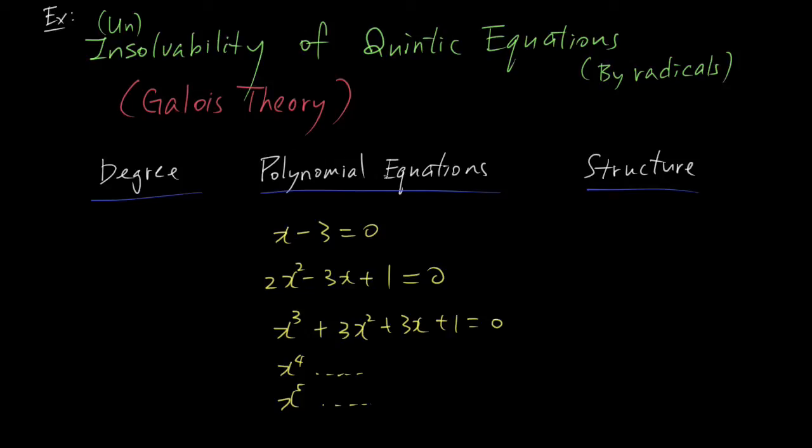Well anyways, the problem looks like this. We have polynomial equations of different degrees. Linear of degree 1, quadratic of degree 2, degree 3, 4, and 5, and so on. 5 is the quintic.